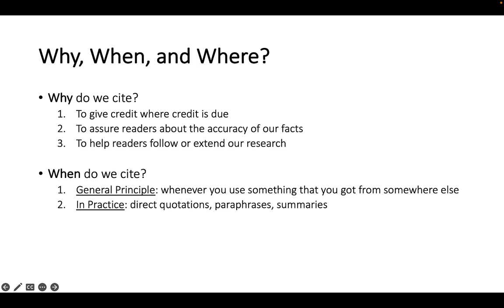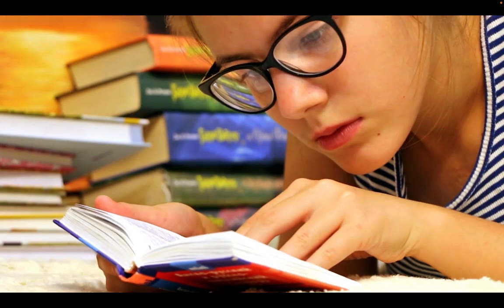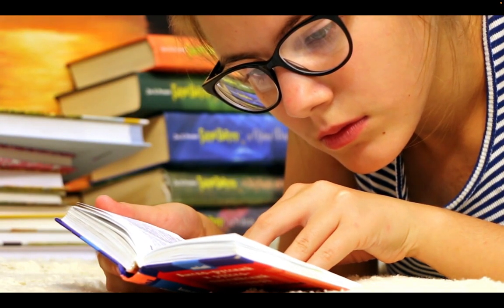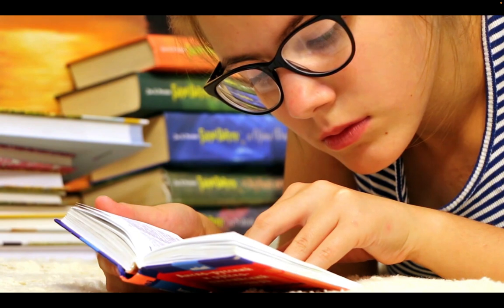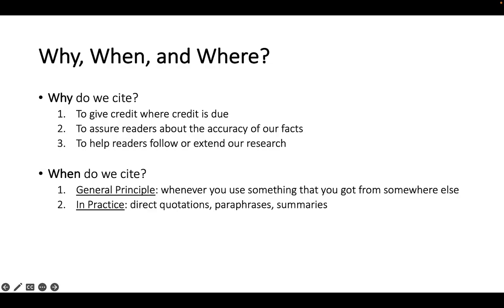Now that we know why we cite, let's talk about when we cite. The general principle is just whenever you use something that you got from somewhere else — if you got information from some book or article, you need to tell the reader where you got that from. In practice, this means any time you add direct quotations, any time you paraphrase a passage from another source, or any time you're summarizing the argument of another book or article, you must put a citation in.